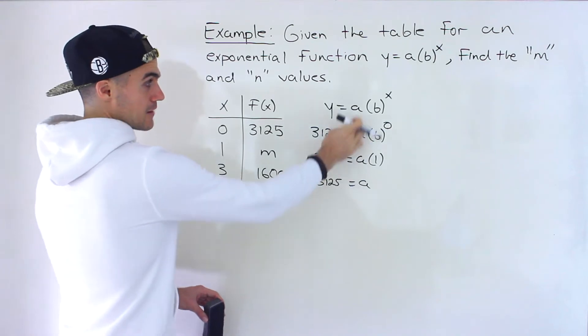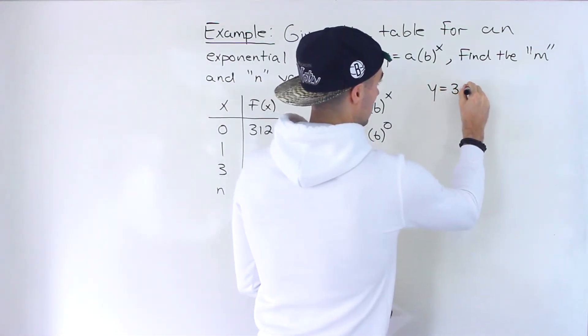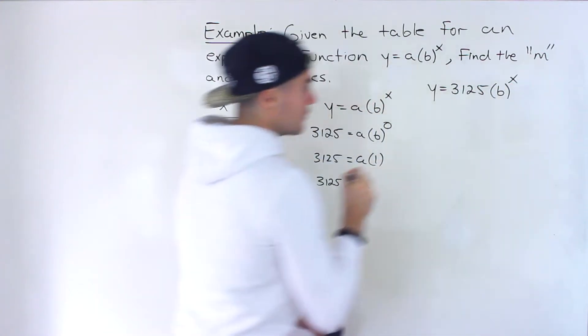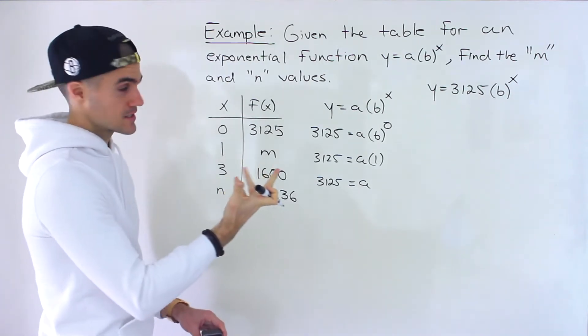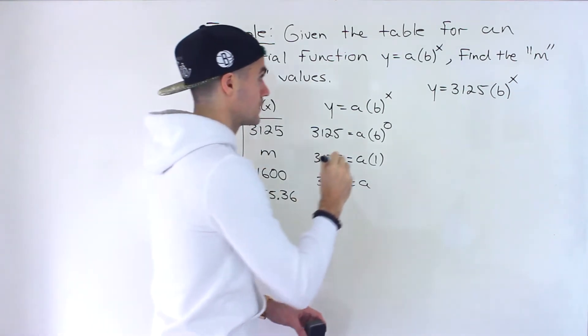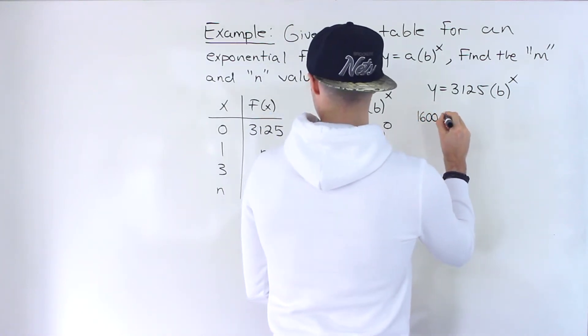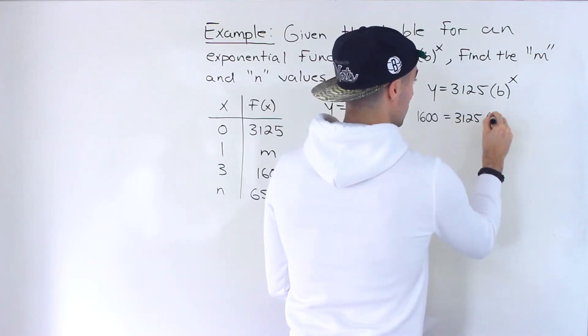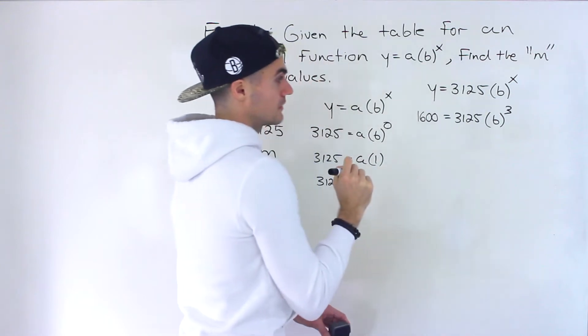So taking that, plugging it in here, we end up with that. And then we could plug in the other coordinate, 3, 1,600, to solve for the b value. So we would have 1,600 equals 3,125. Then we'll have b to the power of 3, like that.